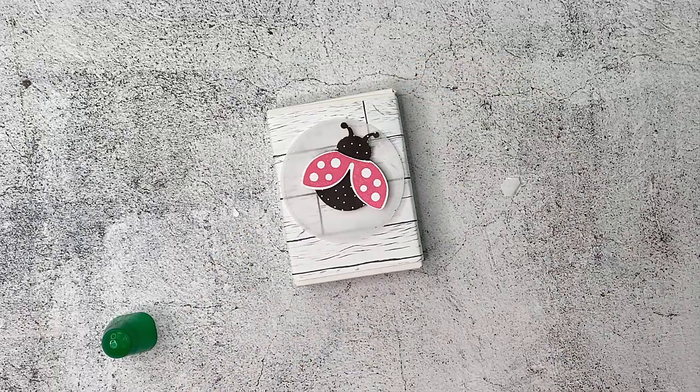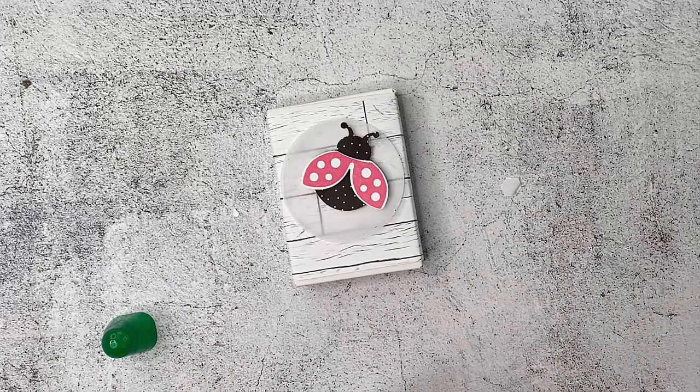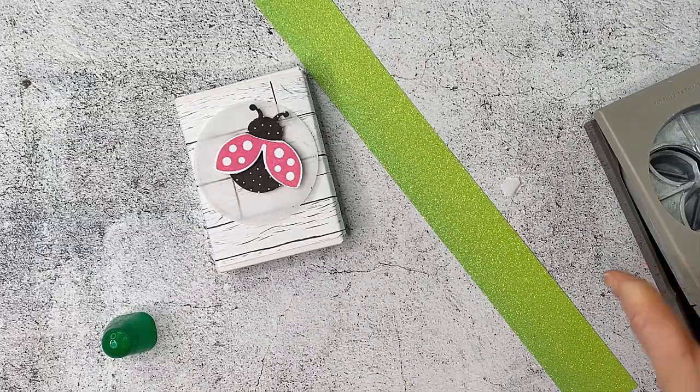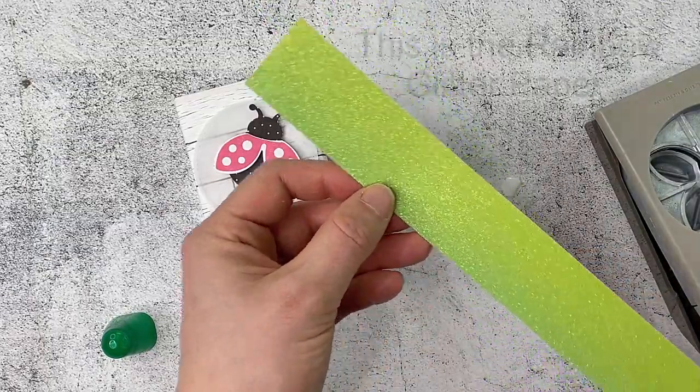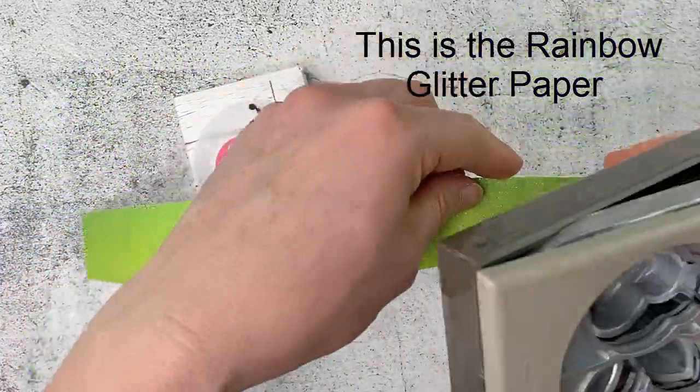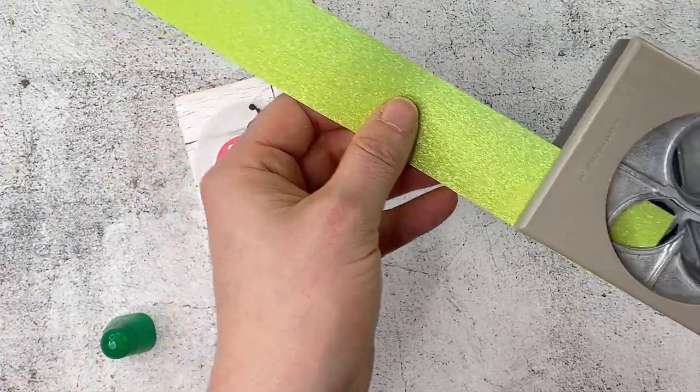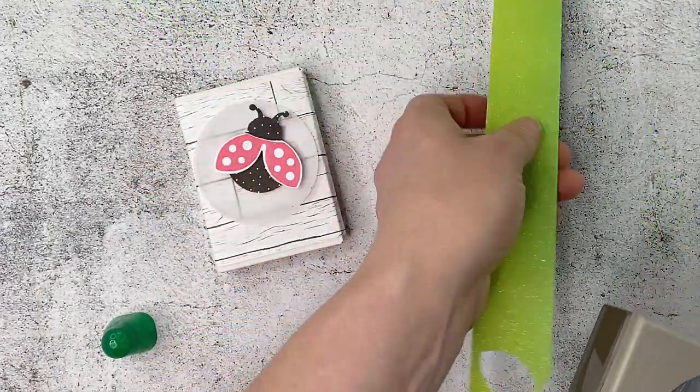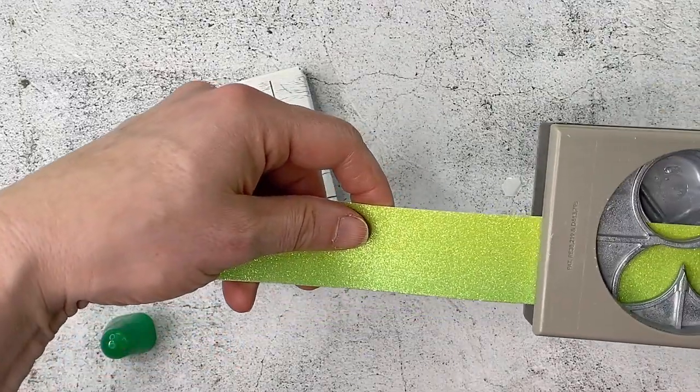Now to make our leaves we're actually going to use the same punch and we're using the glitter paper. I had a whole lot of strips of green glitter paper leftover after our wonderful glitter project we did at extravaganza. So this is a good way to use them.